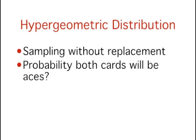The hypergeometric distribution is used to calculate probabilities when sampling without replacement. For example,